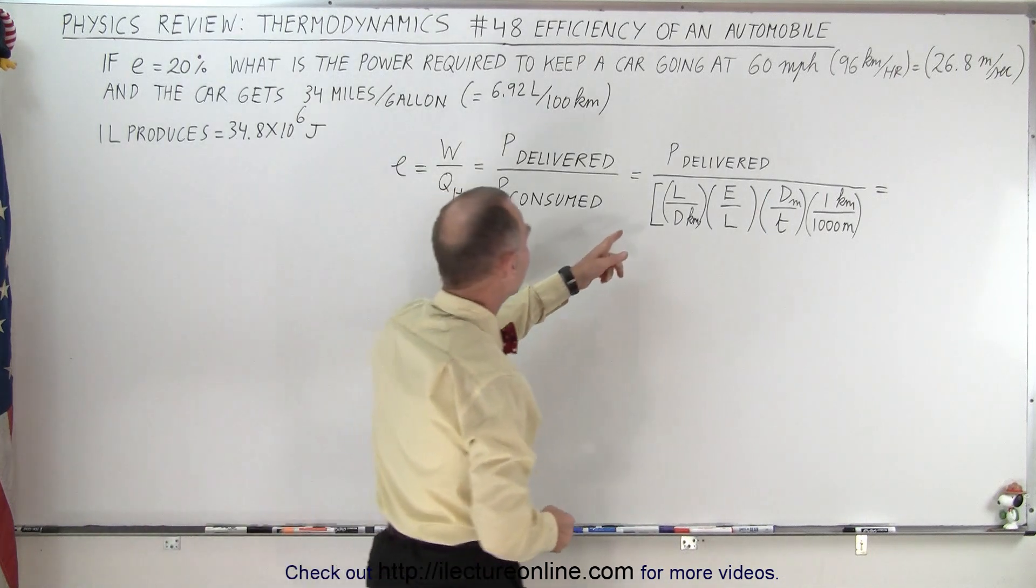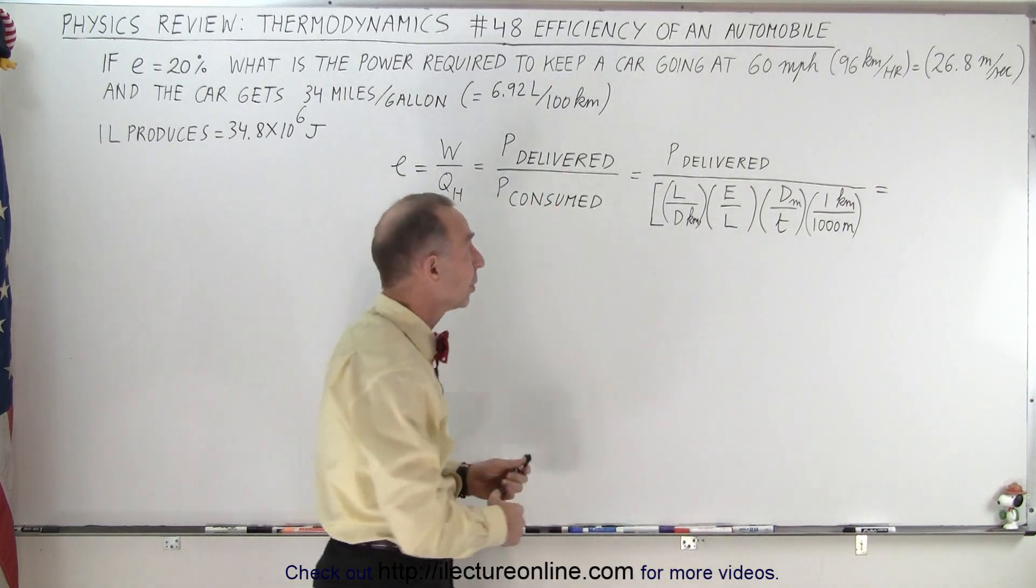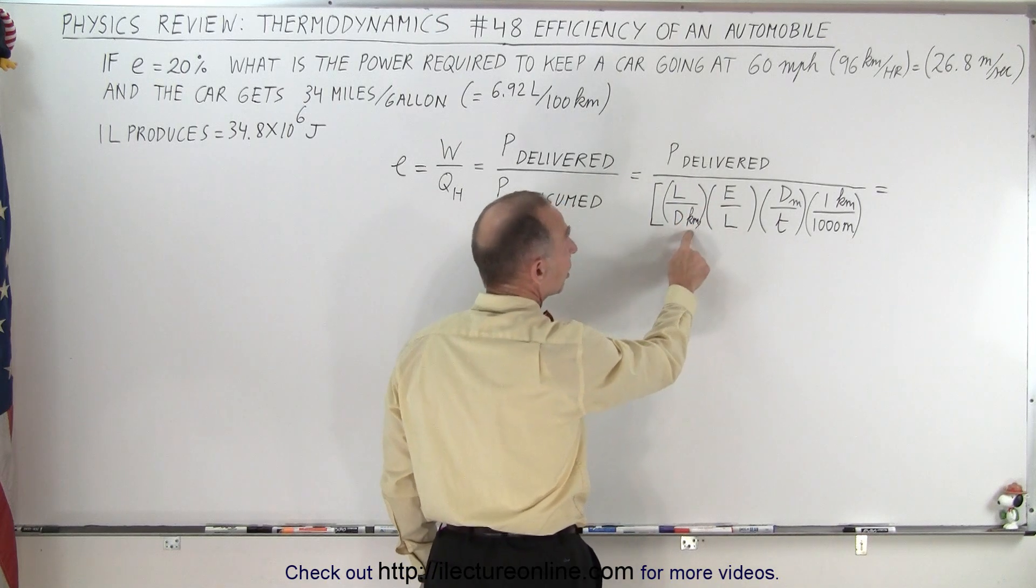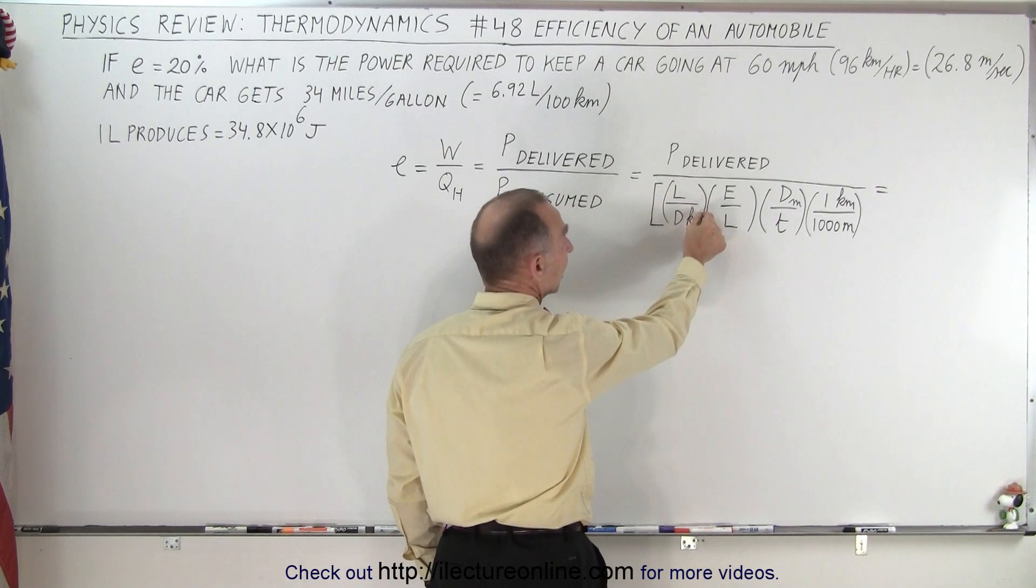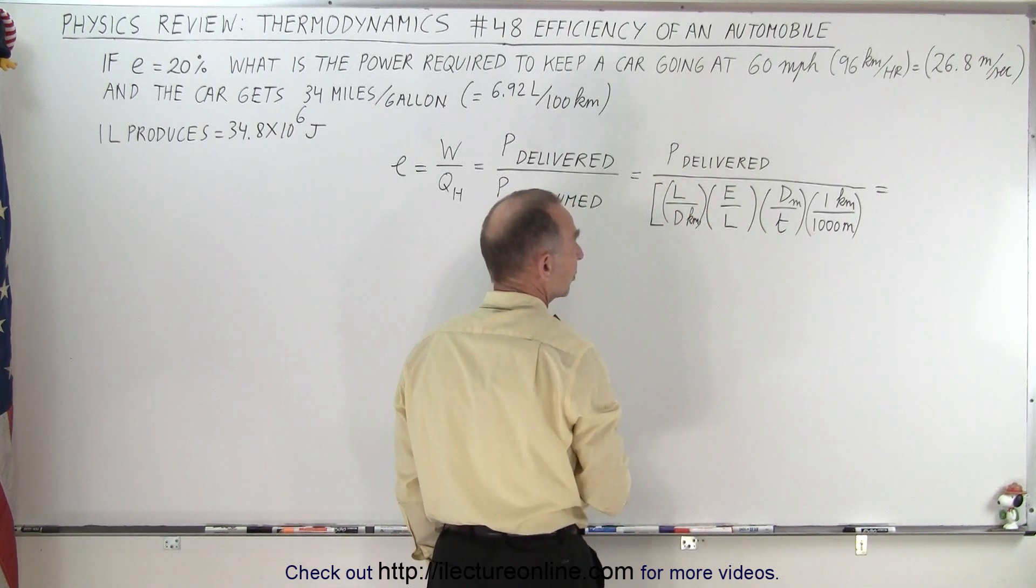So the power delivered now needs to be divided by the power consumed. So how much power do we consume? Well, we take the number of liters per distance traveled in kilometers. We multiply that times the energy per liter, so liters cancels out. Now we have energy over distance in kilometers.